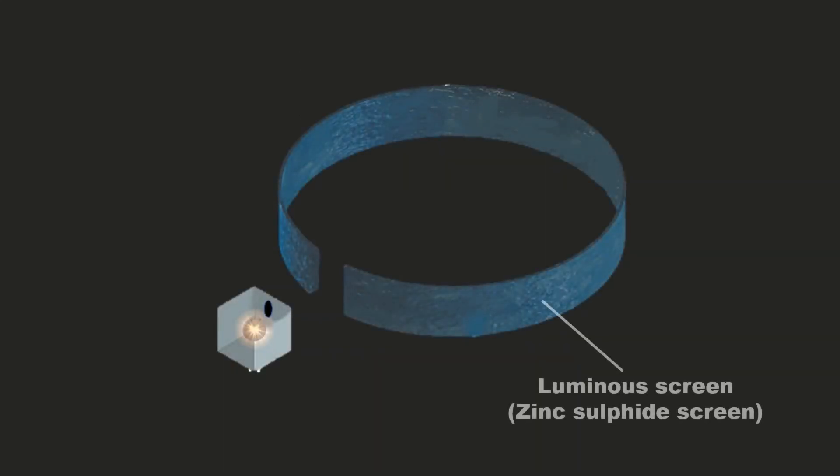Rutherford placed a zinc sulphide screen in a circular shape with an opening. He placed an alpha emitter in a lead box with a small slit so that alpha rays can move straight and faster.